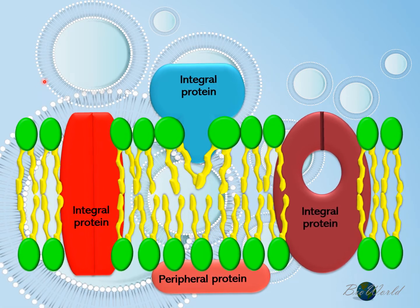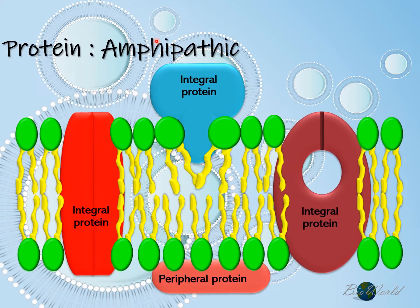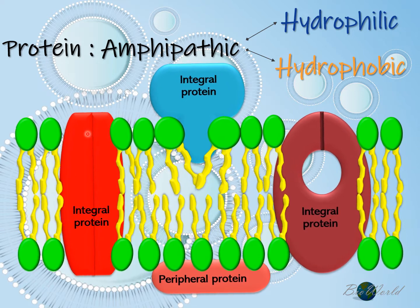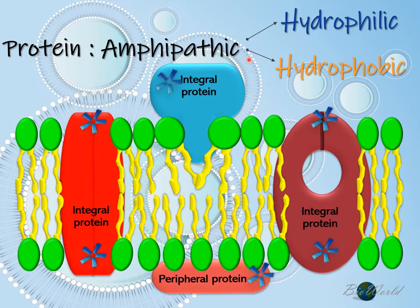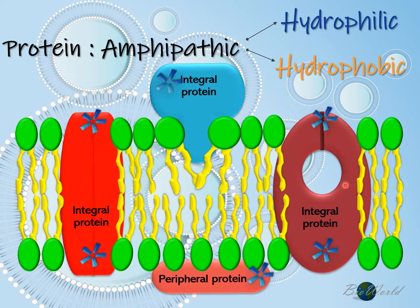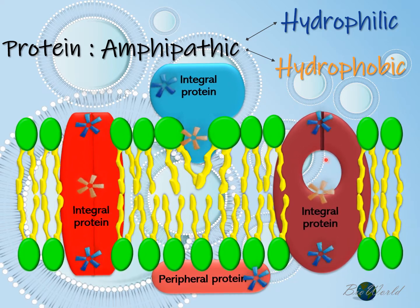Just as how phospholipids are amphipathic, proteins are also amphipathic, meaning that they have ends that are hydrophilic as well as ends that are hydrophobic. So in this diagram, the hydrophilic ends of the protein are the ones which are in contact with either the extracellular fluid or the cytoplasm, while the parts of the protein that are within the bilayer tails are the hydrophobic regions of the protein.